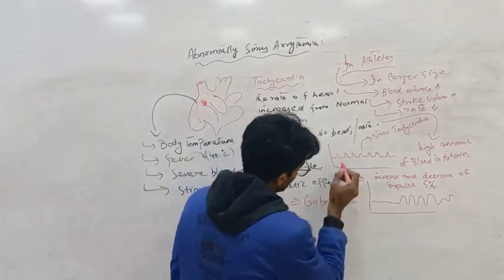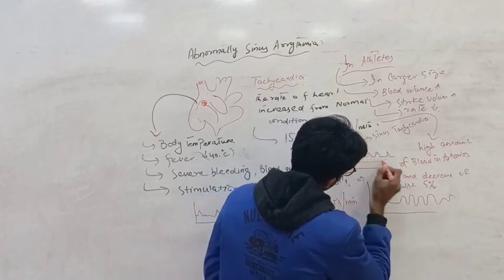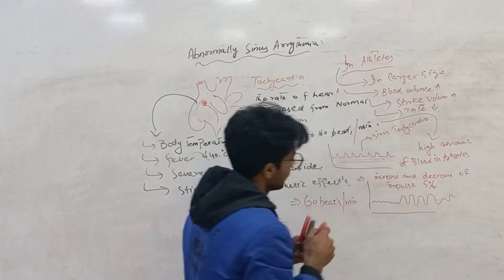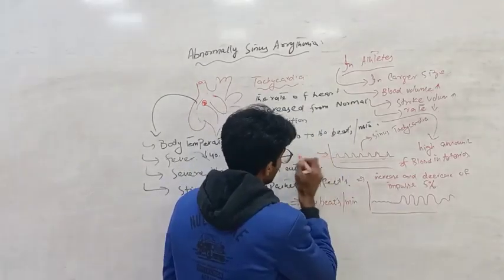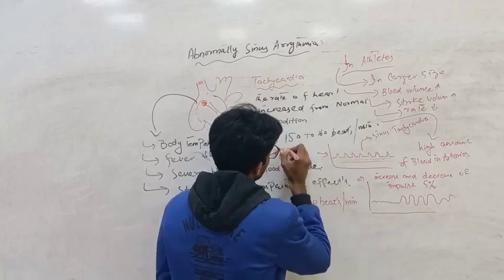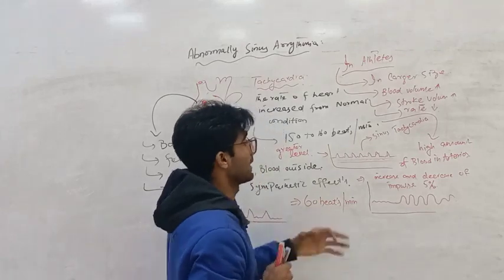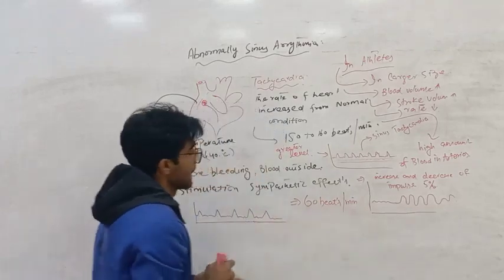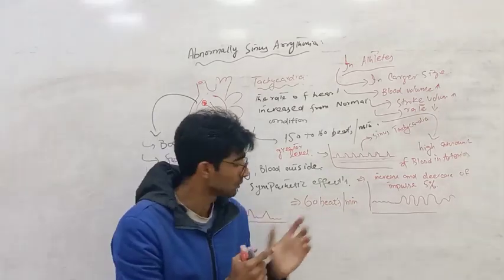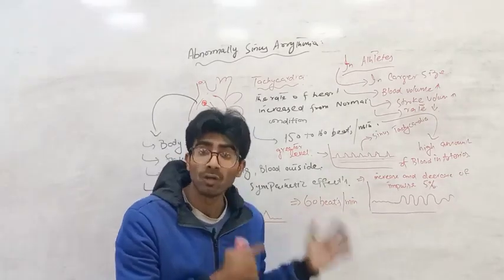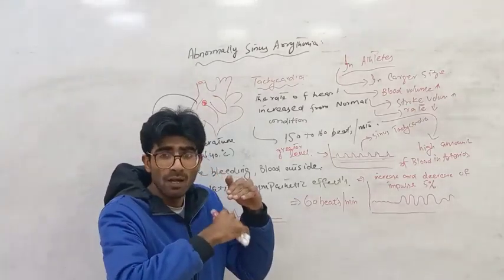Look here — the impulse produces at a higher level. The impulse is produced in a greater amount. The action potential is produced in a greater amount — this is known as sinus tachycardia. In sinus bradycardia, when beats are 60 beats per minute, it is a slow heart rate, and the impulse is produced in a slower amount.